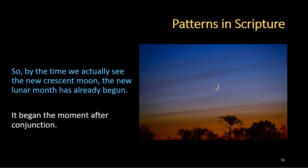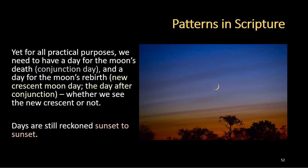By the time we actually see the new crescent moon, the new lunar month has already begun — it began the moment after conjunction. Yet for all practical purposes, we need to have a day for the moon's death, which should be conjunction day, and a day for the moon's rebirth, which is the new crescent moon day — the day after conjunction — whether we see the new crescent or not. Because even Yeshua himself was not actually seen, although he was resurrected, until Sunday morning. And remember, our days are still reckoned from sunset to sunset.